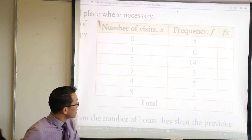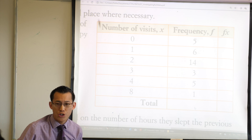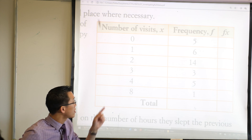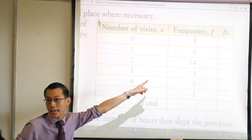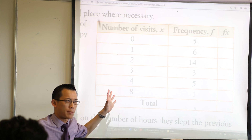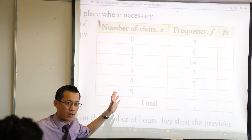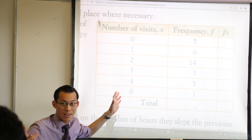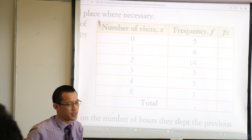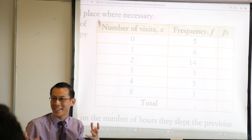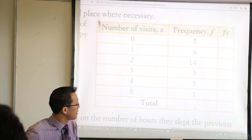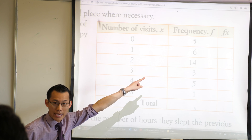Did you remember how I said there are a lot of twos? You can see exactly how many twos there are. That means two has a special name — it's called the mode. The mode is the most common value.